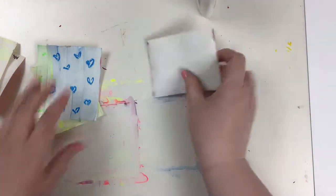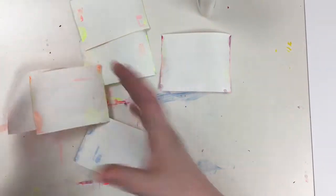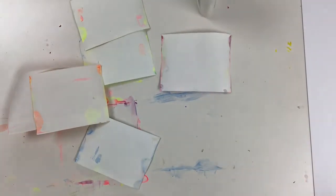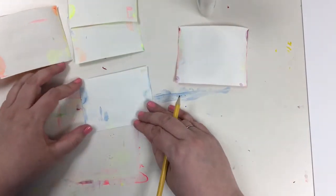Next, we're going to flip them over and using a pencil, we're going to draw our ice cream scoops. And we want our ice cream scoops to be big, so we want to take up most of the paper.